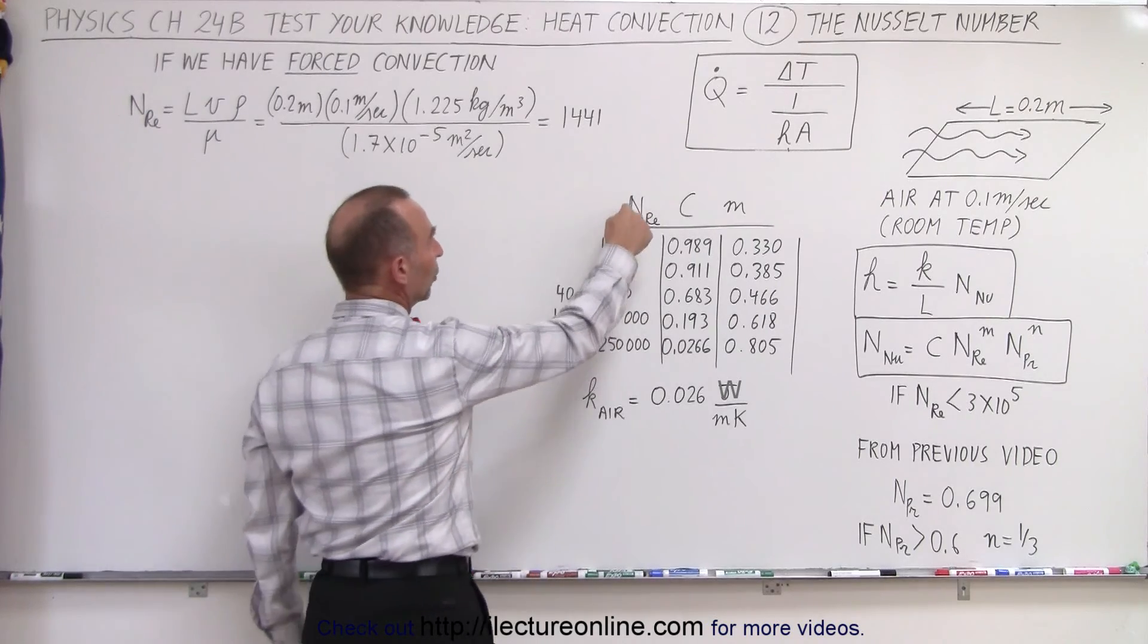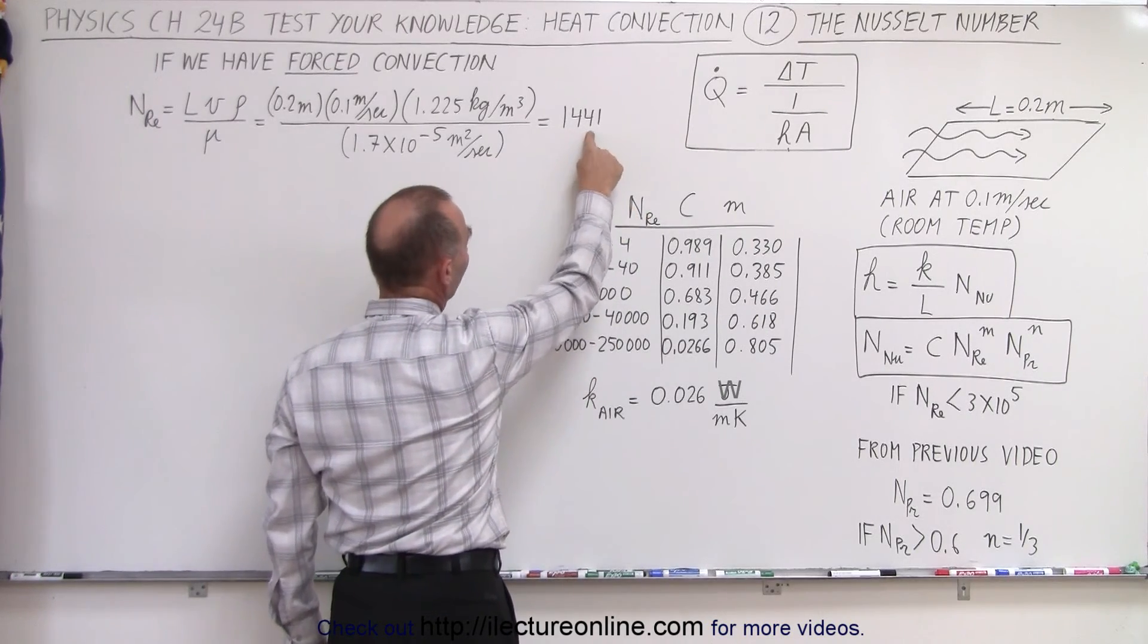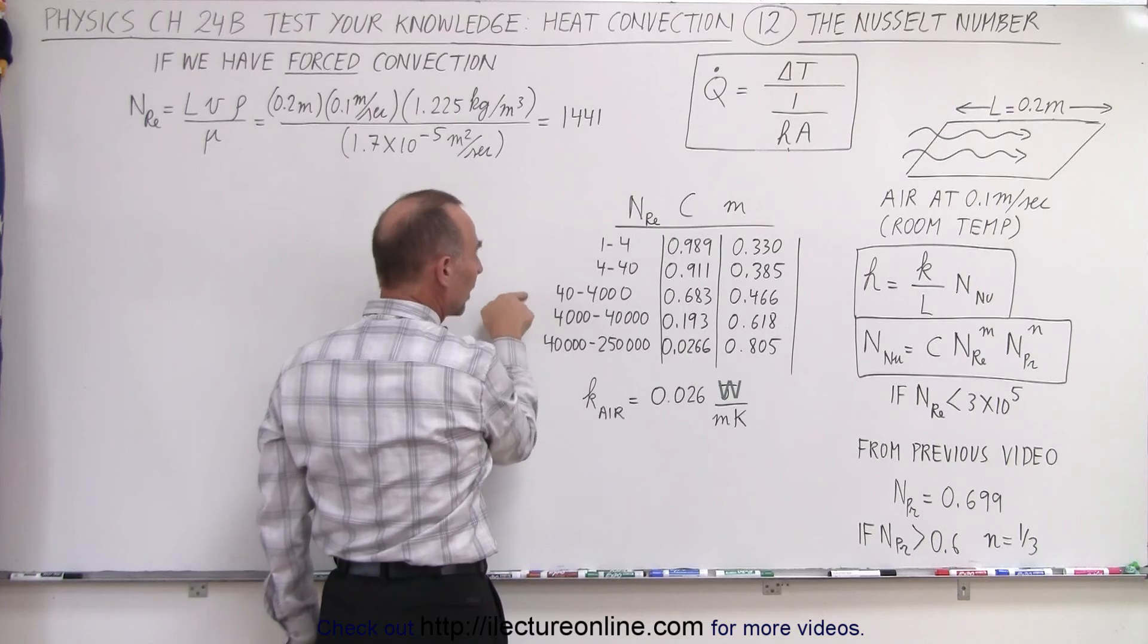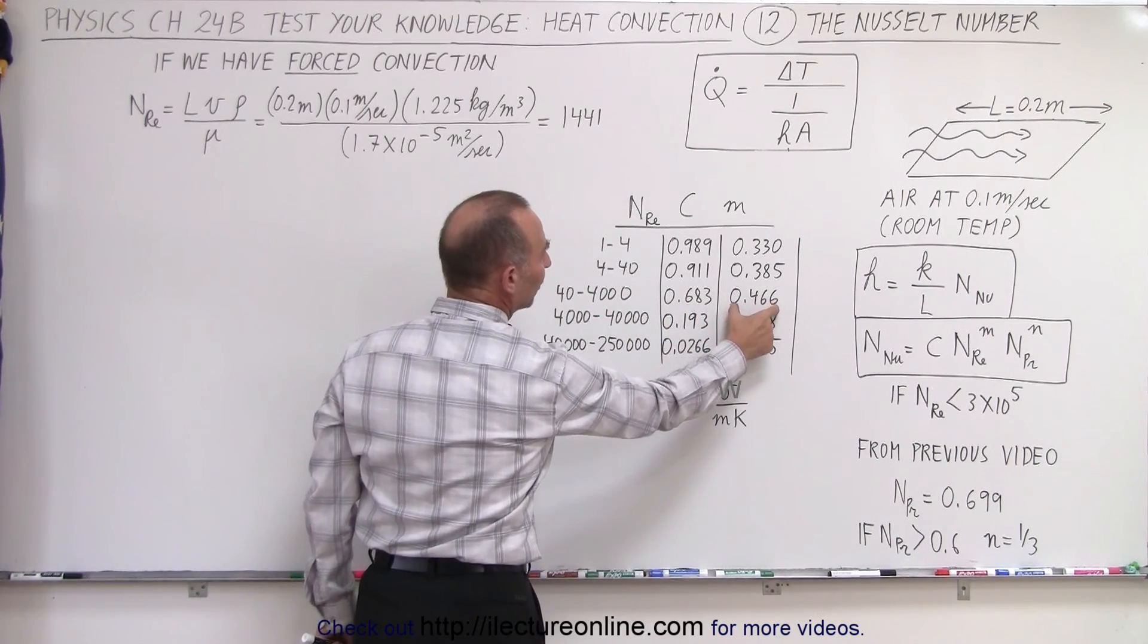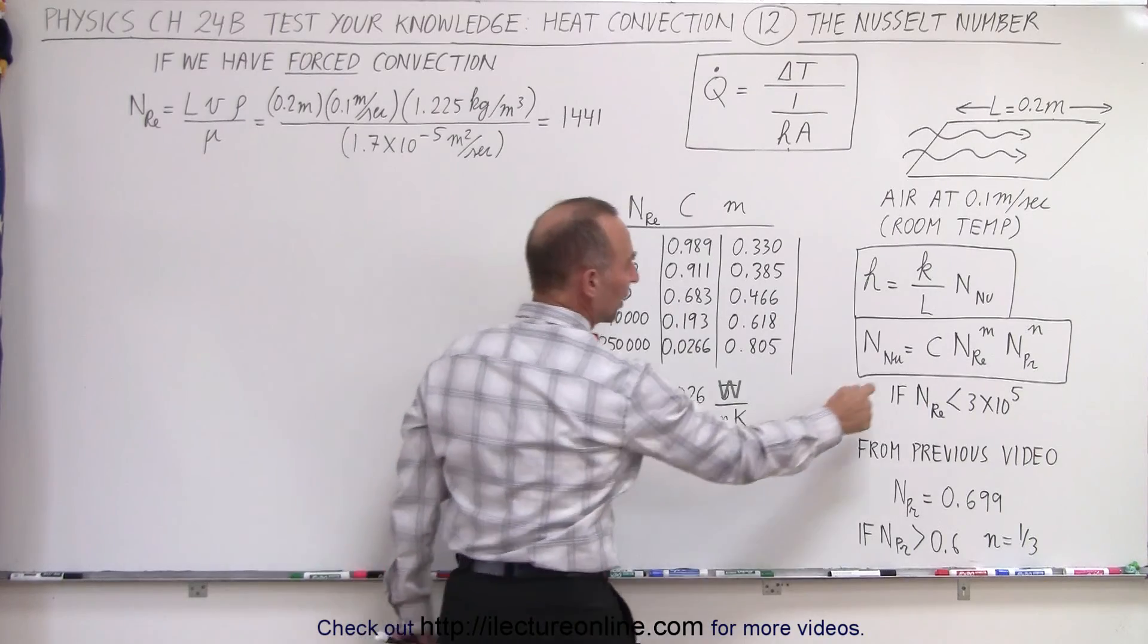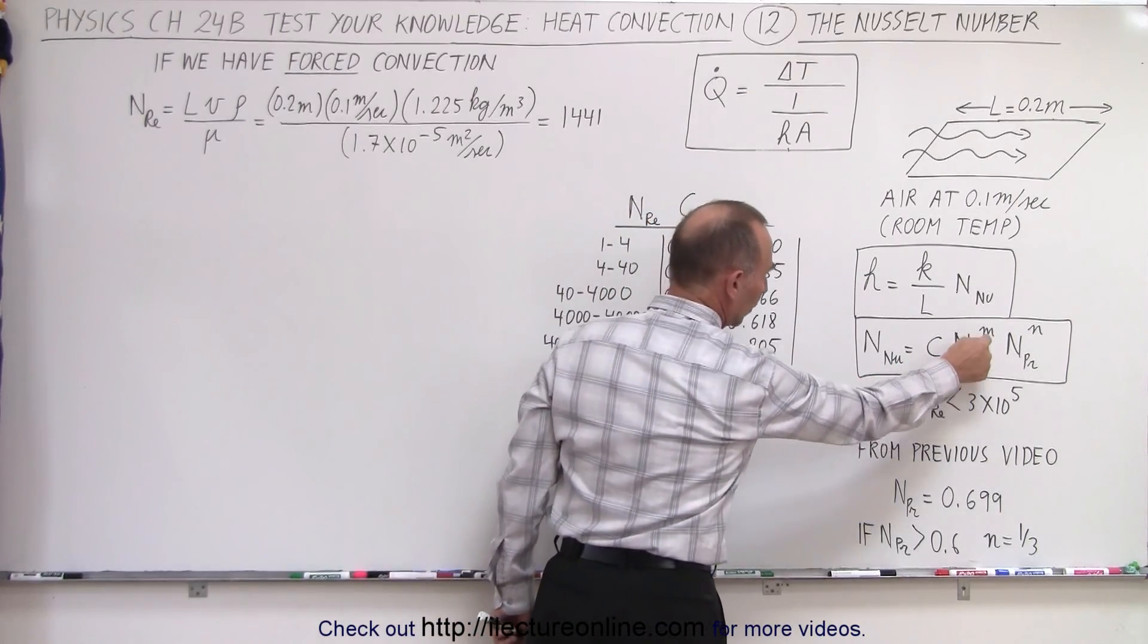Next, given a particular Reynolds number, in this case 1,441, which falls in this range right here, we have a value for C and we have a value for the exponent. Which means that now we know C, we know the Reynolds number, we know the exponent.